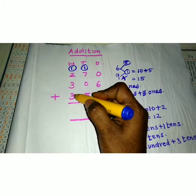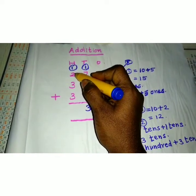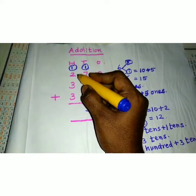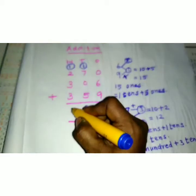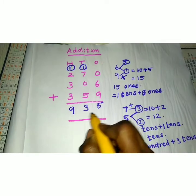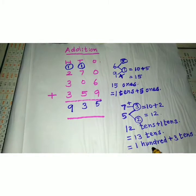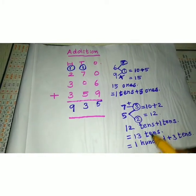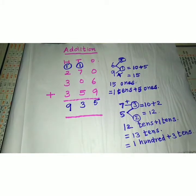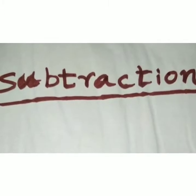Now add the values in the hundreds place: 3 and 3 makes 6, plus 2 makes 8, and 8 plus 1 makes 9. So you got the answer in the hundreds place as 9. Therefore, 935 is your answer by adding 3 three-digit numbers. In this way, you have to do addition problems using the number bond method.